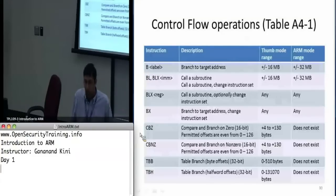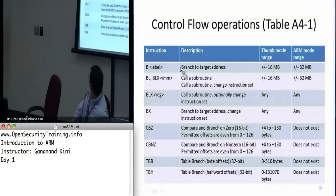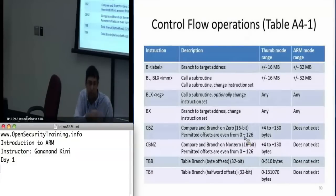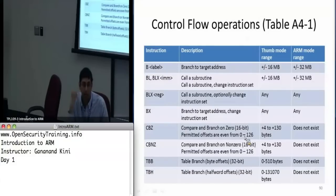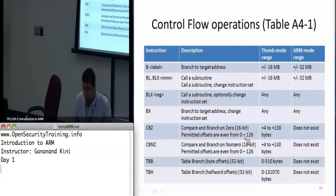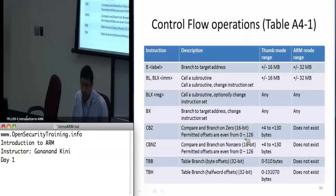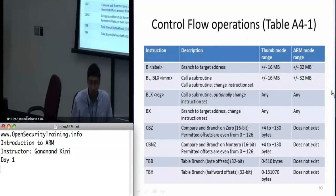Back to control flow: branch stores the target label's address into PC. BL, BLX do an additional operation — they save the program counter into the link register before branching. CBZ and CBNZ are used for conditional operations. Most ARM instructions can be made conditional, so if you wanted a conditional add or subtract, you could do that using a suffix from a mnemonic table.